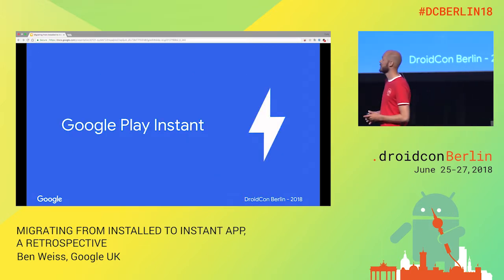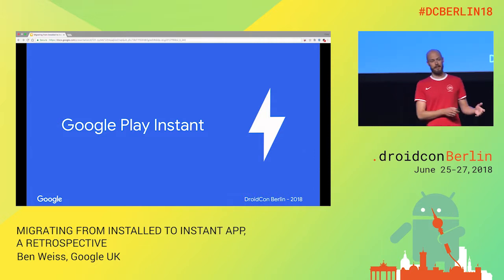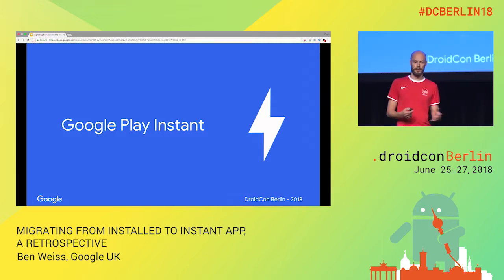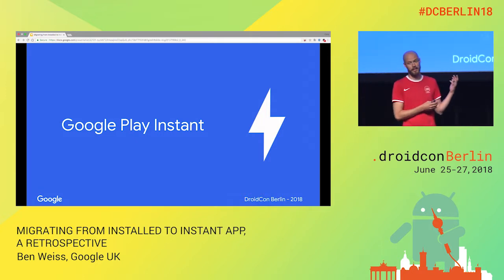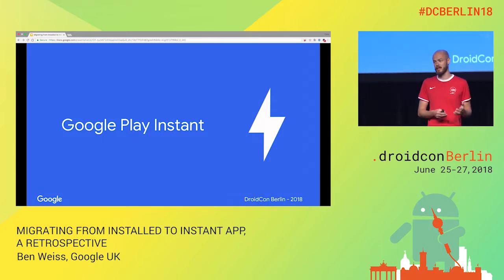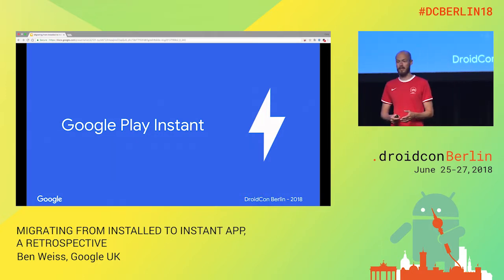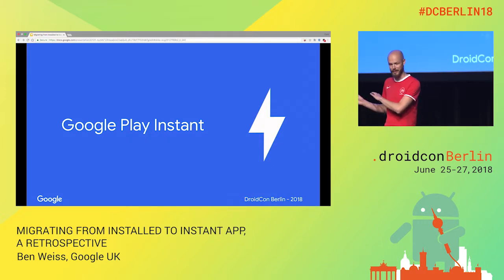Firstly, there was a rebranding from Instant Apps or Android Instant Apps to Google Play Instant, which is a lot better for users because they don't really care about Instant Apps but it's part of Google Play. That's why the name you will see in documentation is Google Play Instant. But underneath the hood for developers, the plugin is still going to be Instant App. It's not going away, it's just been renamed.